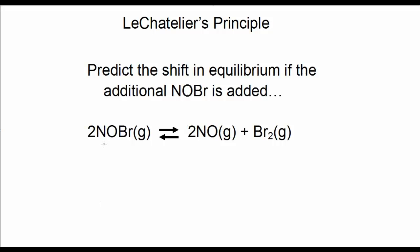In this chemical reaction, predict the shift in equilibrium if additional NOBr is added. Identify NOBr as a reactant. If we add more NOBr, will the reaction shift to the right or to the left to compensate? If you predict a shift to the right, you'd be correct.